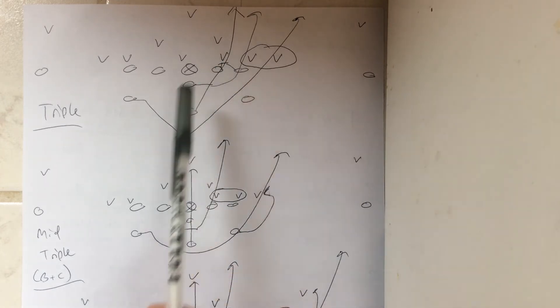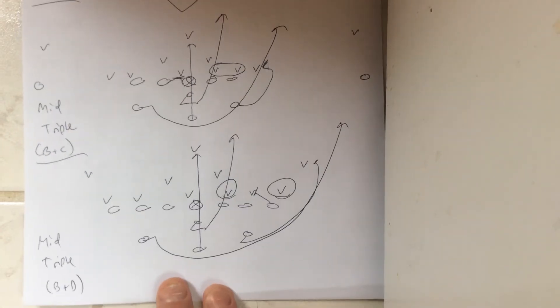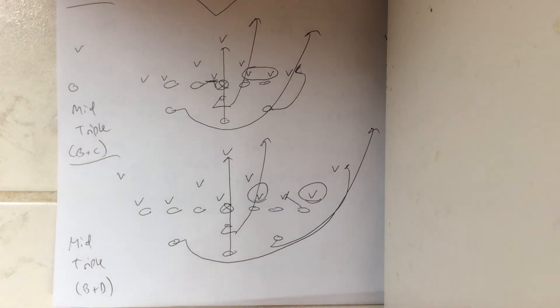This diagram, you block the B-gap defender, but you read the C and D-gap defender. There's another midline triple variation here too, where you can read the B and D-gap defender, but block the C-gap defender.